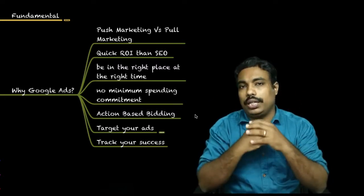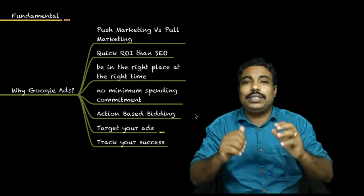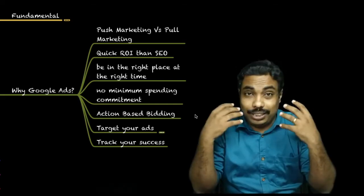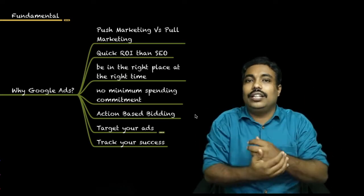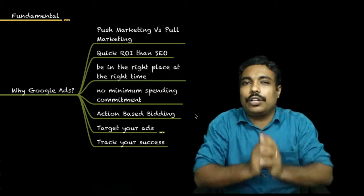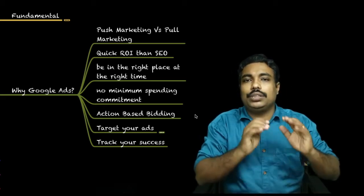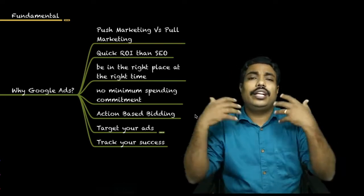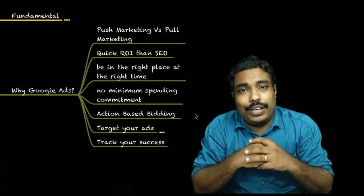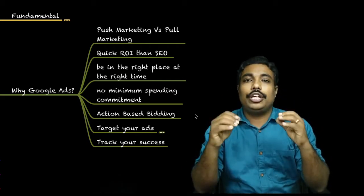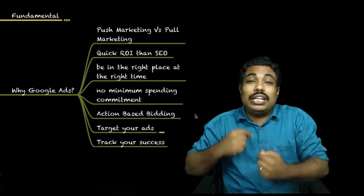Push marketing — social media ads, display ads, YouTube ads — all run based on interest. We try to find what the audience is interested in, and based on our ad they end up buying. That is push marketing. Pull marketing is different: when I travel at night and my car breaks down, I don't go to Facebook to look for a breakdown service provider — I go to Google and search for one.